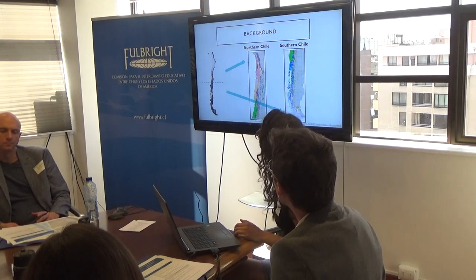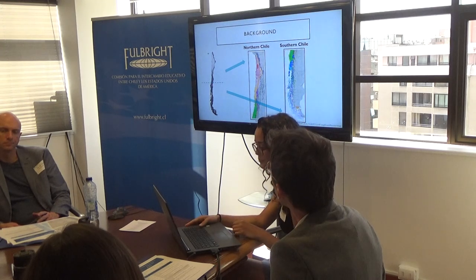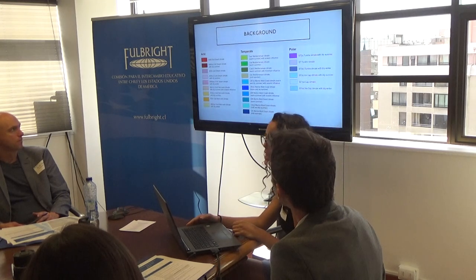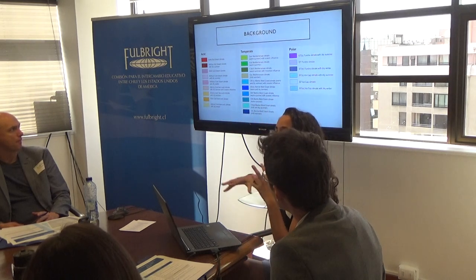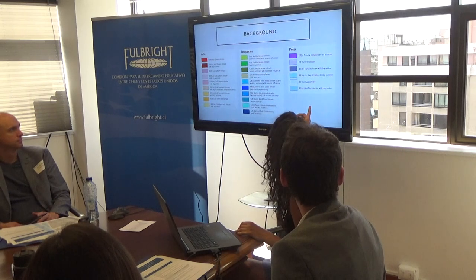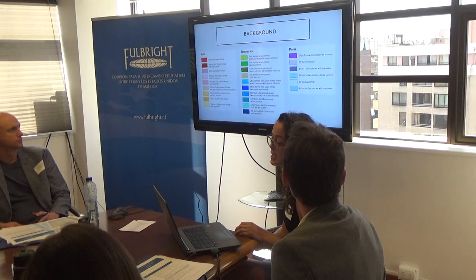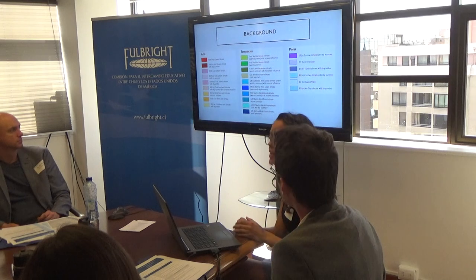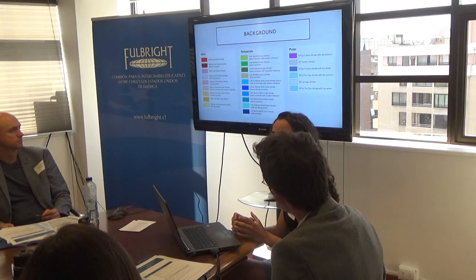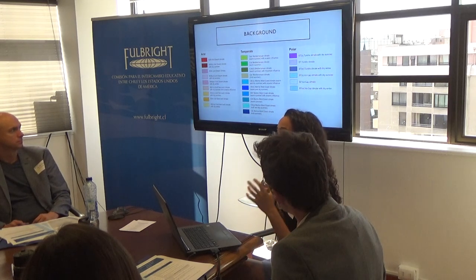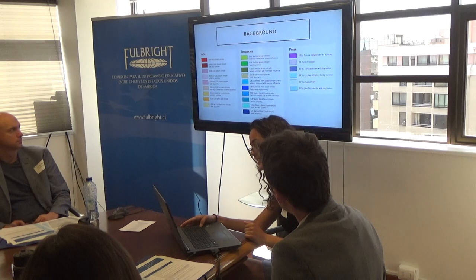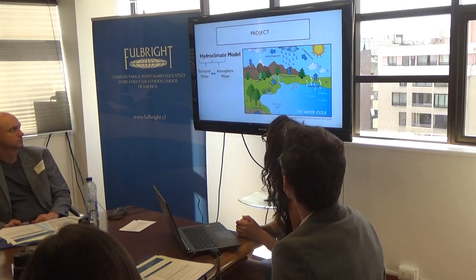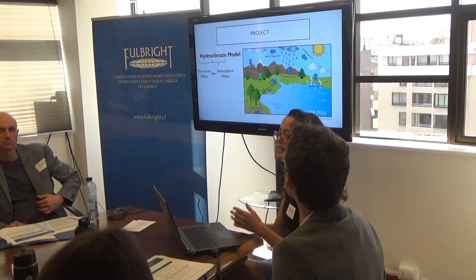Splitting Chile into a northern chunk and a southern chunk, each color represents a different climate — which is remarkable. Those climates span from more arid climates in the north, to more temperate climates in the central region where we are now, and then polar climates down in the south. That variation makes this country a really cool place to study how climate and hydrology change all within the same country.